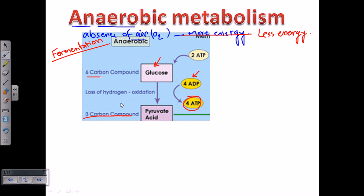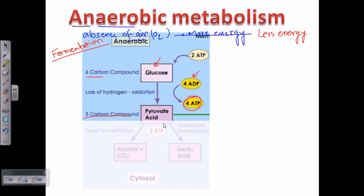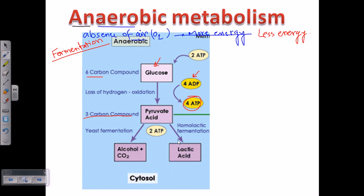The glycolysis pathway is common — it is present in bacteria, in eukaryotes, and all of them. But after pyruvate is produced, the rest of the processes are specialized in specific types of cells. From pyruvate, toward the anaerobic pathway, it can go in two different directions: one is ethanol or alcohol fermentation, and the other is lactic acid fermentation.